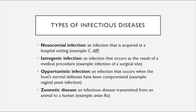Iatrogenic infections are infections that occur as the result of a medical procedure — anything from a rash resulting from taking a particular medicine, or an infection of a surgical site after a procedure. Opportunistic infections are infections that occur when the host's normal immune system defenses have been compromised. For example, a vaginal yeast infection would be considered an opportunistic infection if it arises after broad-spectrum antibiotic treatment, which leaves the vaginal canal devoid of bacteria that compete with the yeast, allowing them to proliferate.